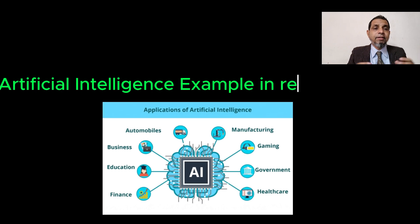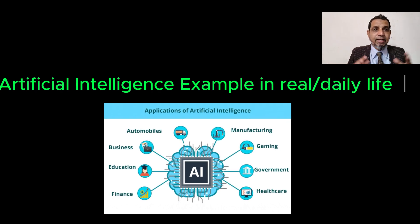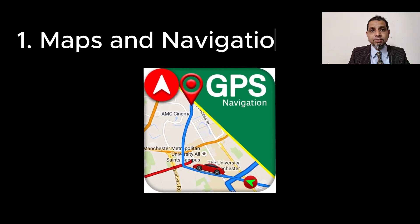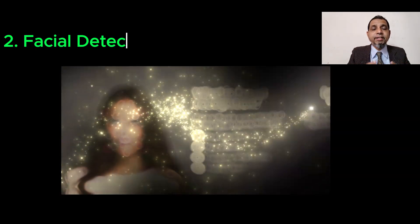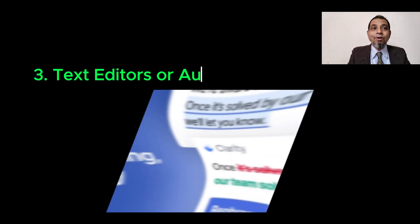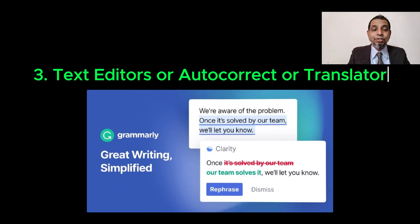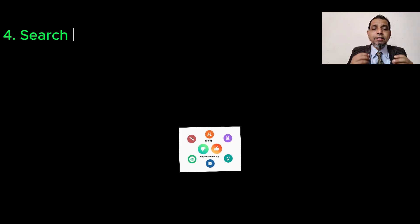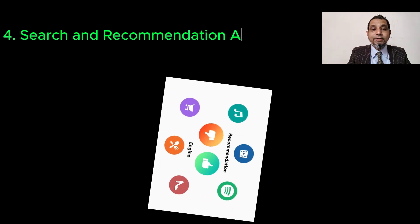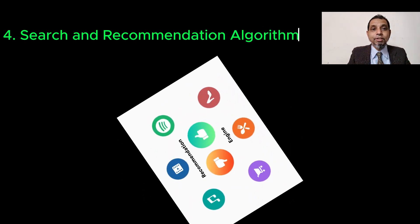Though artificial intelligence affects all walks of our daily life, it is used for: number one, maps and navigation; number two, facial detection and recognition; number three, text editor auto-correct and translation using natural language processing; and number four, searching and recommendation algorithms based on the usage metrics of internet or computer users.